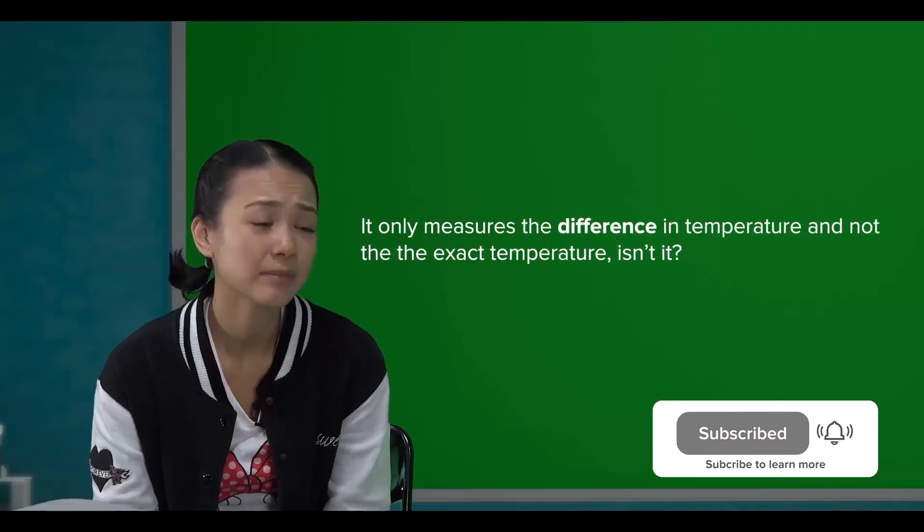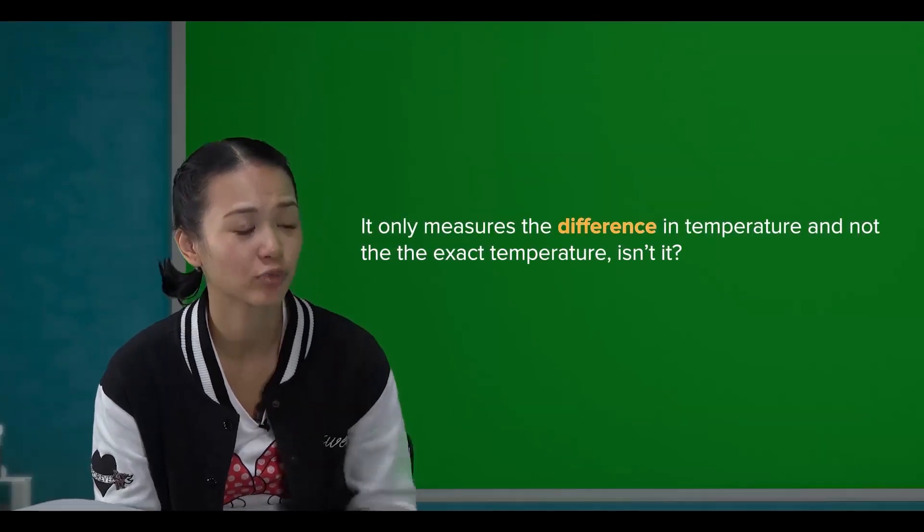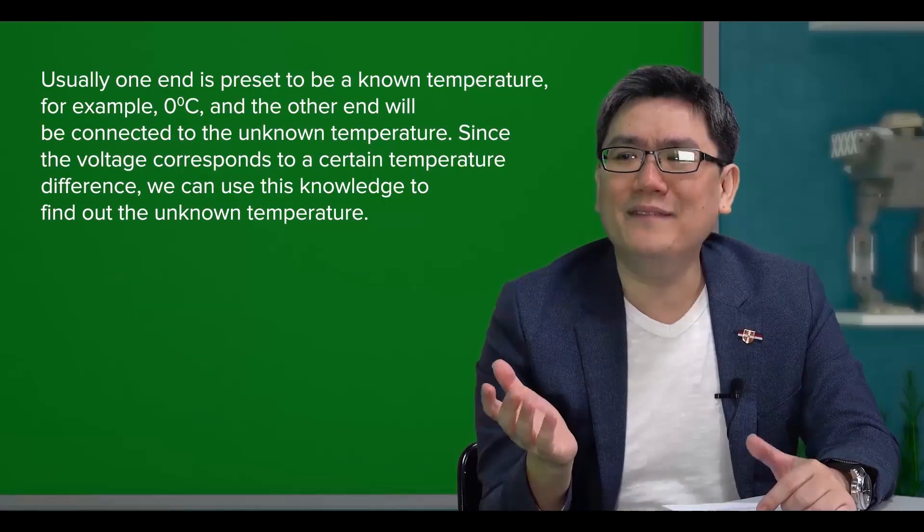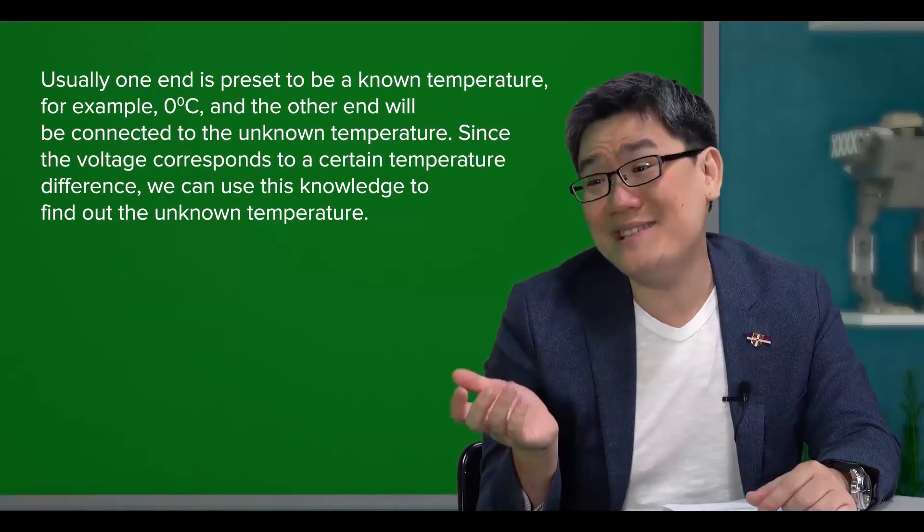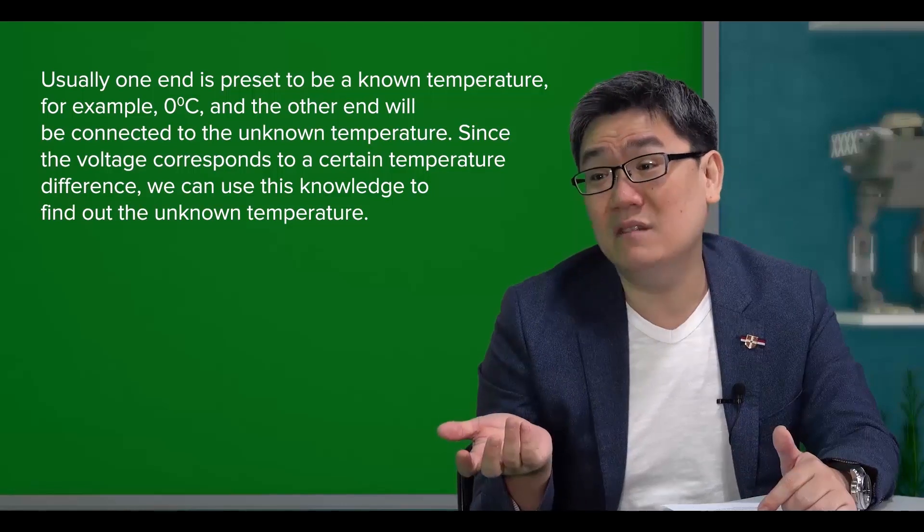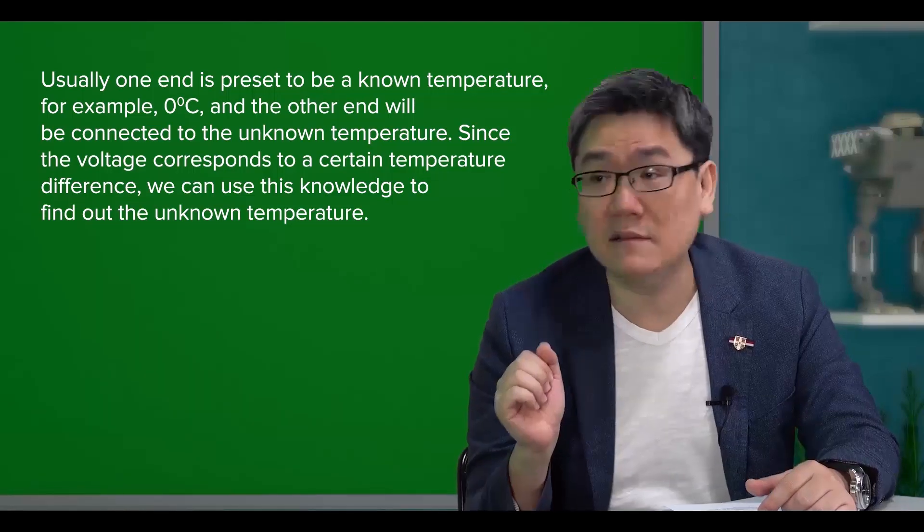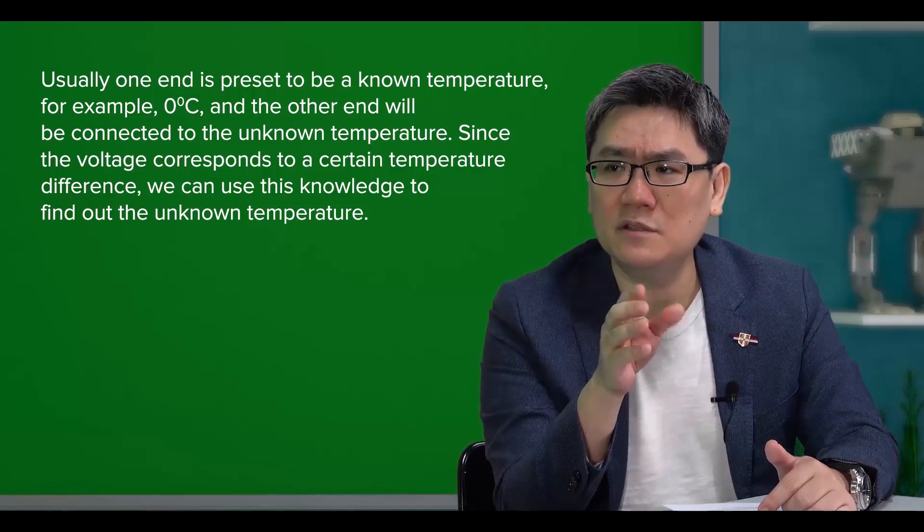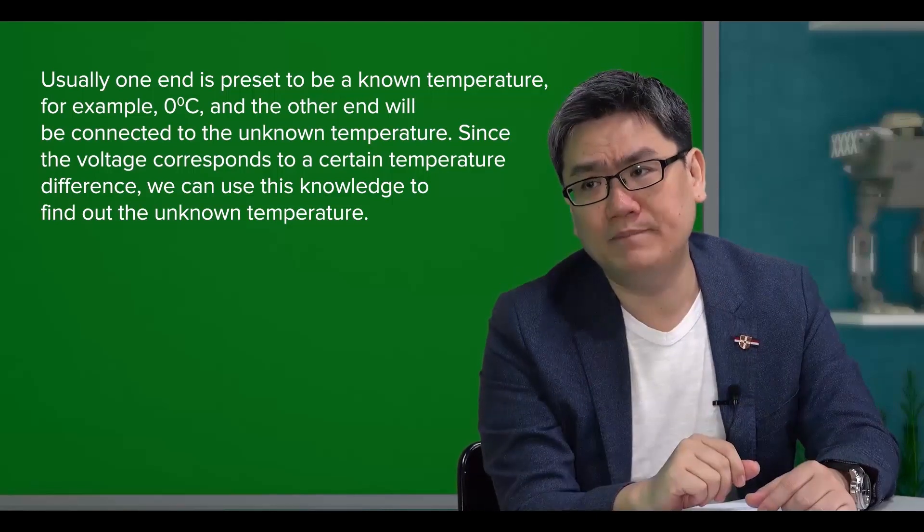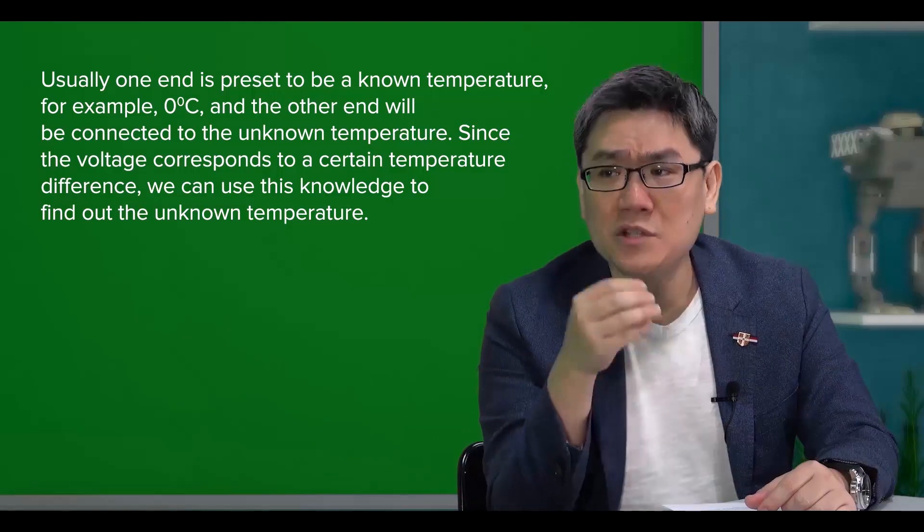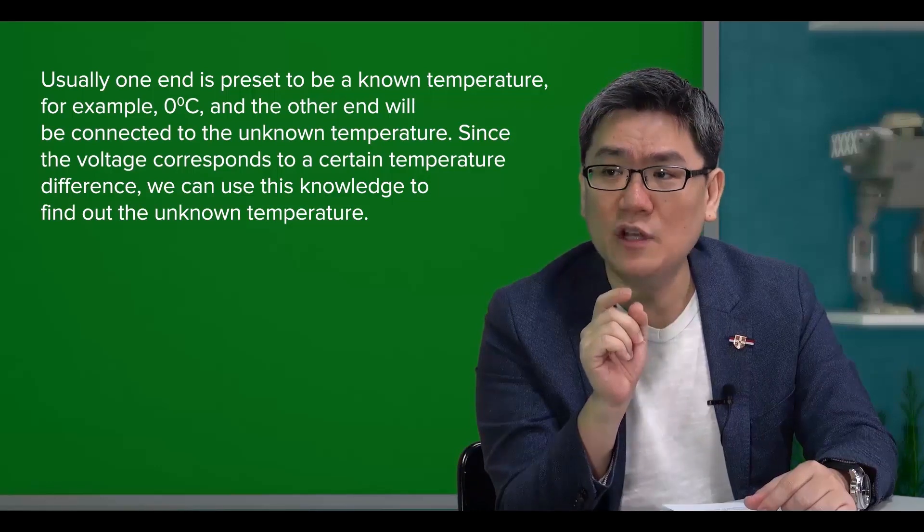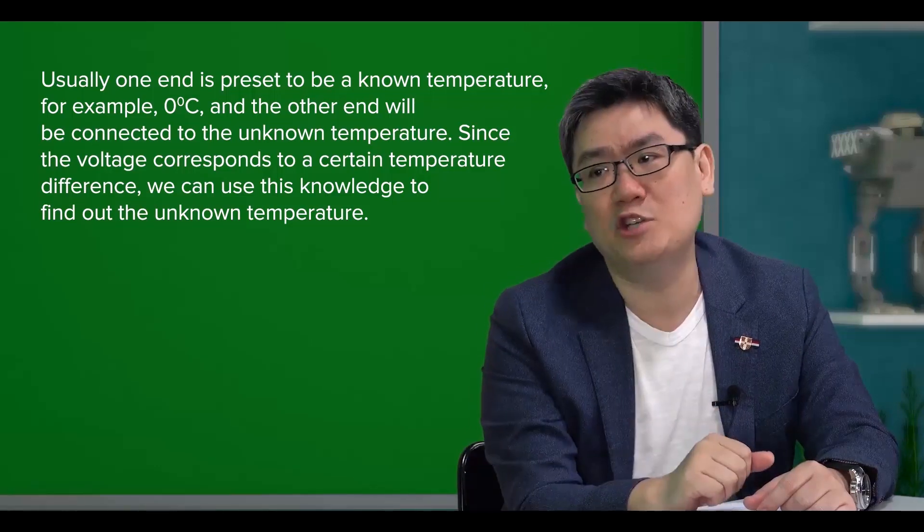But it only measures the difference in temperature and not the exact temperature, right? Well, usually one end is preset to a known temperature, for example, zero degrees Celsius. And the other end will then be connected to the unknown temperature. Since the voltage corresponds to a certain temperature difference, we can use this knowledge to find out the unknown temperature.